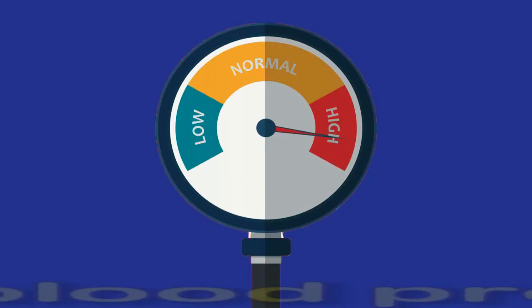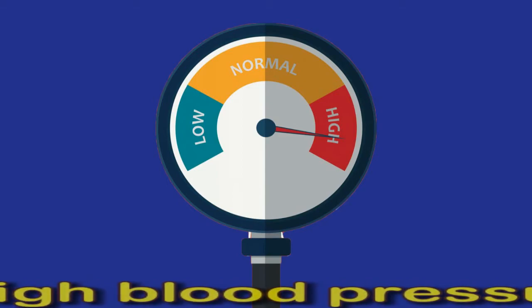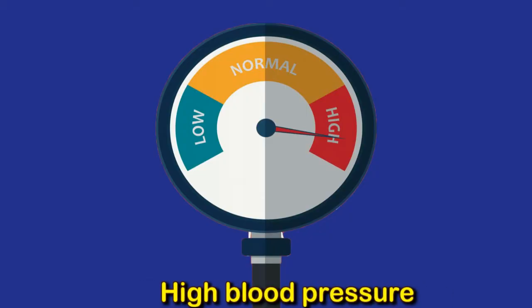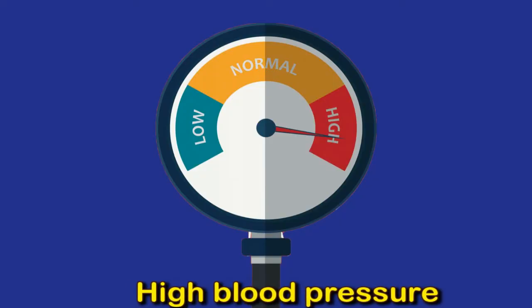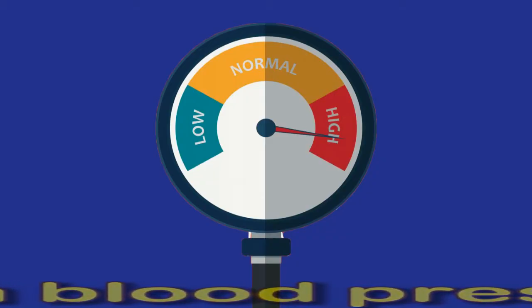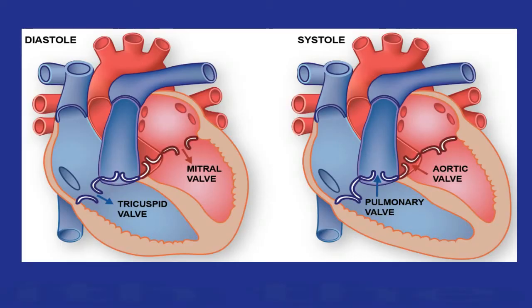Causes: the size of the left atrium depends on the size of the individual and may change as a person ages. Conditions that may cause left atrial enlargement include high blood pressure. Left atrial enlargement can help doctors predict cardiovascular events such as heart attacks. Research has found a link between left atrial enlargement and both treated and untreated high blood pressure or hypertension. Diagnosing left atrial enlargement can help doctors determine the risk of a heart attack in people with high blood pressure.